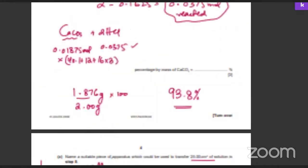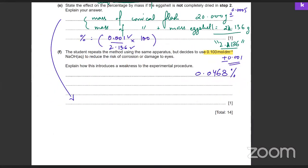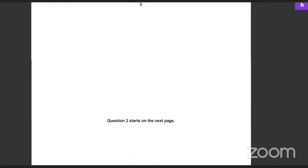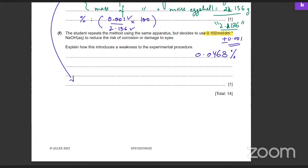For the weakness question about changing NaOH concentration: the burette only measures up to 50 cm³. Because the volume would go up 10 times to 162.5 cm³, that's out of the range of the burette's capacity. You just need to state that using the dilute solution means more volume is needed, which exceeds the capacity of the burette.